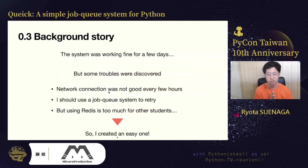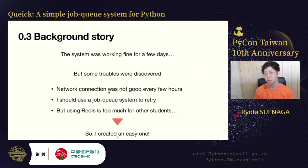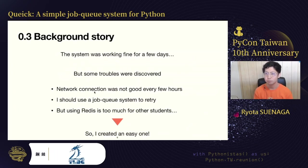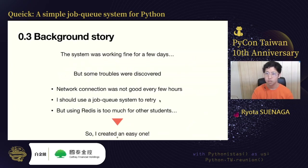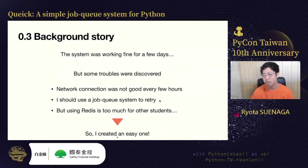The system was working perfectly for a few days, but some troubles were discovered. First, a network connection problem — the connection was closed every few hours for some reason. So I thought I should use a job queue system to retry. But using Redis as middleware is too much for other students. So I created an easy one. I know this is not the best solution, but I did it.